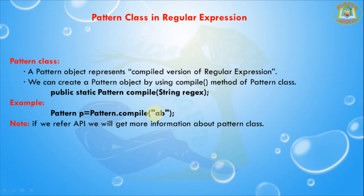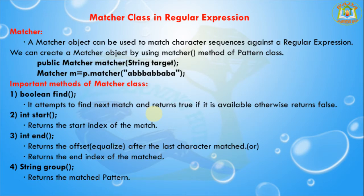If we refer to the API, we will get more information about the Pattern class. Now I am going to discuss the Matcher class. A Matcher object can be used to match character sequences against a regular expression. We can create a Matcher object by using the matcher method of the Pattern class. The method signature is: public Matcher matcher(String target).